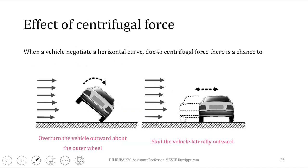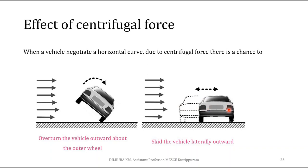Now, the effects of centrifugal force: when a vehicle moves through a horizontal curve, due to centrifugal force there is a chance of the vehicle overturning towards the outer direction of the curve with respect to the outer wheel. There is also a chance of the vehicle skidding laterally outward. So these are the two effects of centrifugal force — first is overturning, and second is lateral skidding.